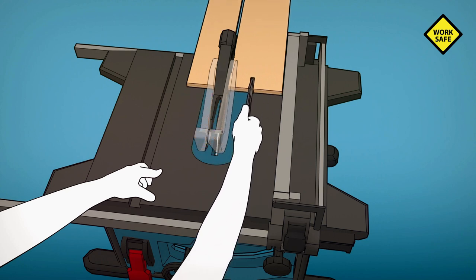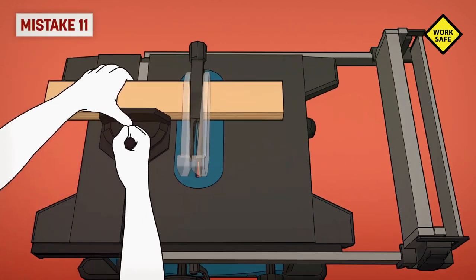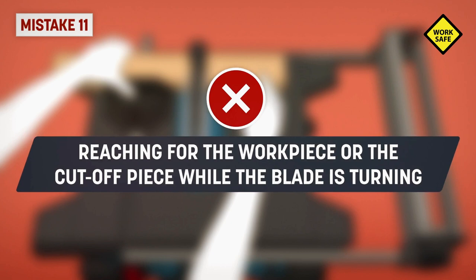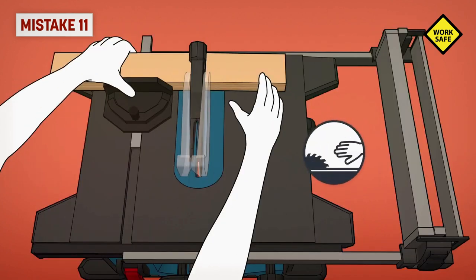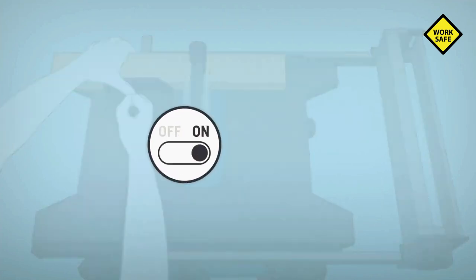Mistake eleven: reaching for the workpiece or the cutoff piece while the blade is turning. To reduce the chances of cutting yourself, turn the switch off and wait for the blade to come to a complete stop before reaching around or over the blade.